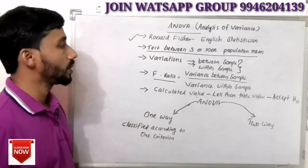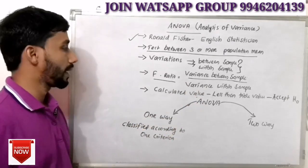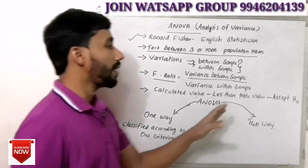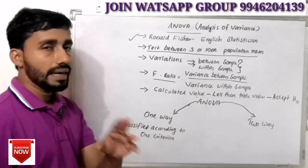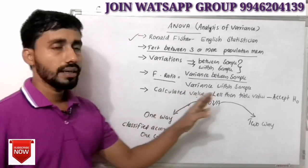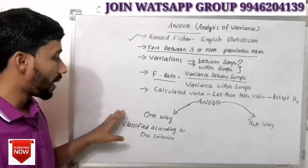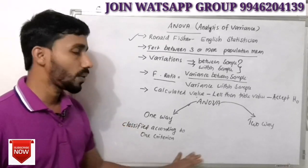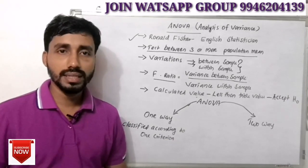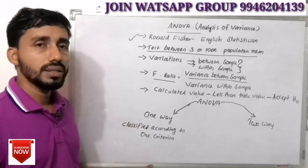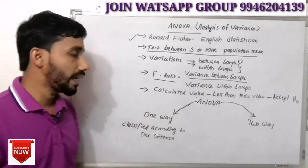We will discuss the number of samples. If the calculated value is less than the table value, we accept the null hypothesis. In ANOVA, there is a one-way ANOVA and a two-way ANOVA. One-way ANOVA is classified according to one criterion.